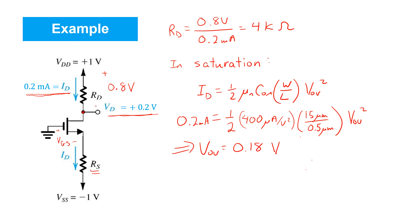Turns out VOV is 180 millivolts in this case. Finally, knowing that the threshold voltage given is 0.5 volts, so we can find VGS. It's just the sum of VOV and the threshold voltage is 0.68 volts.